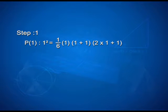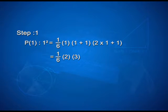In step 1, P(1): 1² = (1/6) × 1 × (1+1) × (2×1+1) = (1/6) × 2 × 3 = 1. This gives 1 equals 1, therefore P of 1 is true.